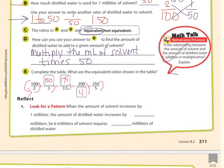What was on the top is now on the bottom. Look for a pattern. When the amount of solvent increases by 1 milliliter, the amount of distilled water increases by what? Increases by 50 each time. So, 6 milliliters of solvent requires how many milliliters of distilled water? Well, for every milliliter of solvent, you need 50 milliliters of water. So that would be 300.